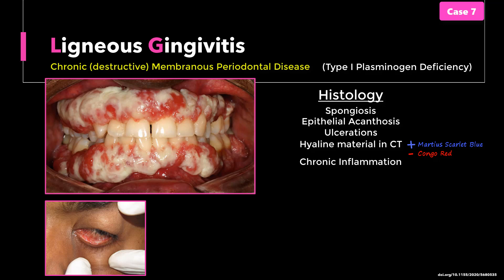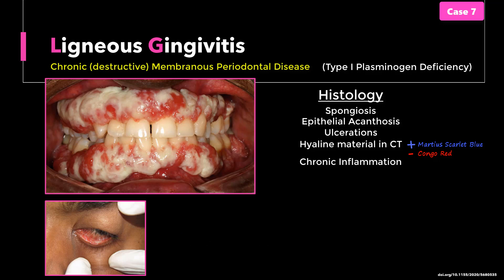Type 1 plasminogen deficiency impairs wound healing and compromises extracellular clearance of fibrin, leading to the development of ligneous or wood-like lesions in various parts of the body. The accumulated fibrin is pro-inflammatory and may manifest as chronic gingivitis, conjunctivitis, vaginitis, pharyngitis, and so on. Ligneous conjunctivitis is the most common presentation, often presenting in childhood and potentially leading to corneal scarring and vision loss. Repetitive occlusive hydrocephalus may also be seen in some individuals. Type 2 deficiency is characterized by normal levels of the proenzyme but with reduced activity, and is not associated with these symptoms — considered a polymorphic variation.